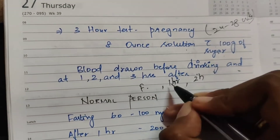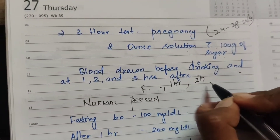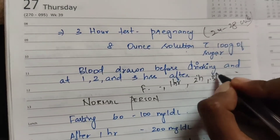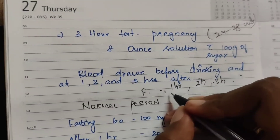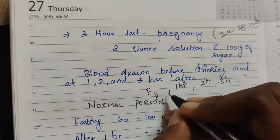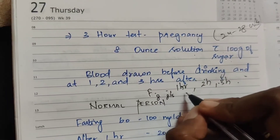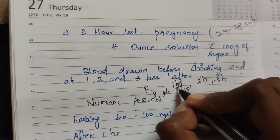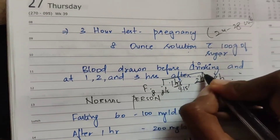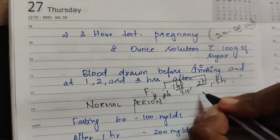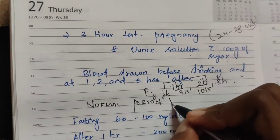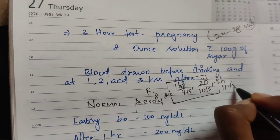Blood samples are collected before drinking and then at 1 hour, 2 hours, and 3 hours after consumption. For example, if fasting is at 8:15, then samples are collected at 9:15 (1 hour), 10:15 (2 hours), and 11:15 (3 hours).